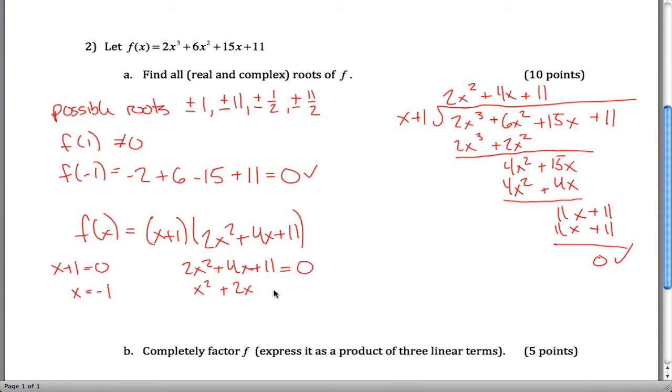Divide both sides by 2. Complete the square. Let's see, we got x plus 1 squared.